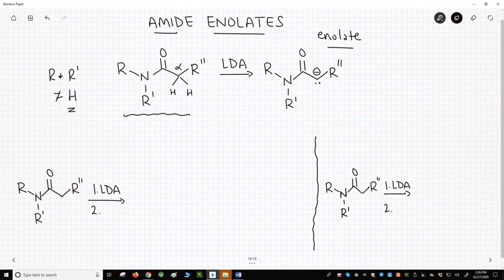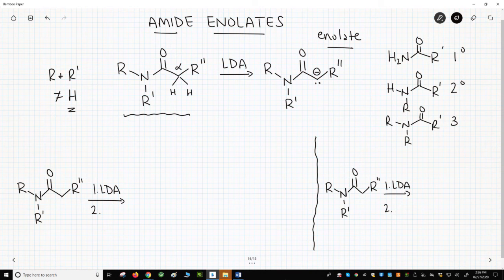Amides come in three forms. An amide with an NH2 group is a primary amide. An amide with NHR is a secondary amide, and an amide with two R groups on the nitrogen is called a tertiary amide. Only tertiary amides can form enolates.